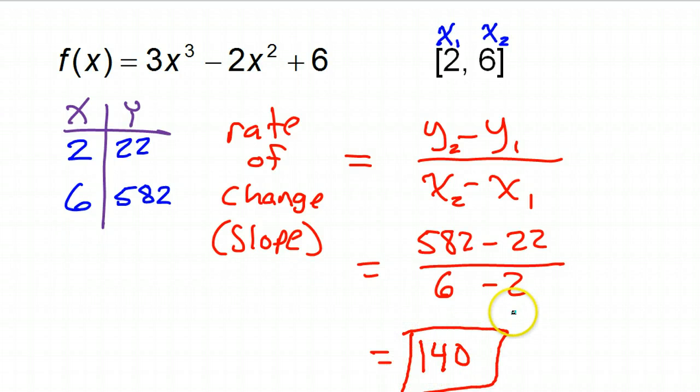All right, so that is how you calculate the average rate of change over a given interval. It's really just the slope, y minus y over x minus x. Make a table.